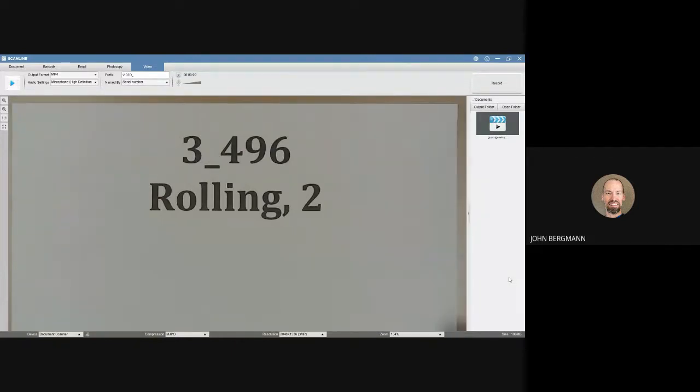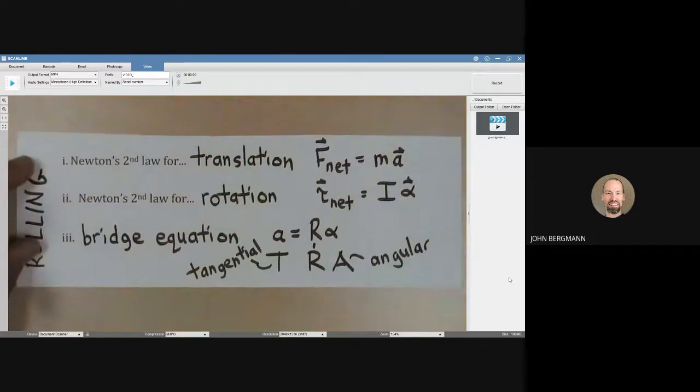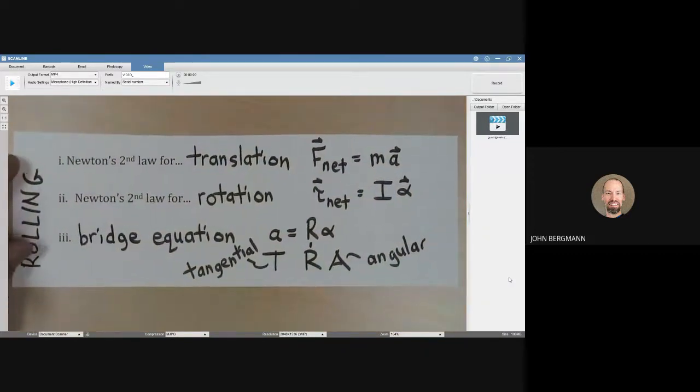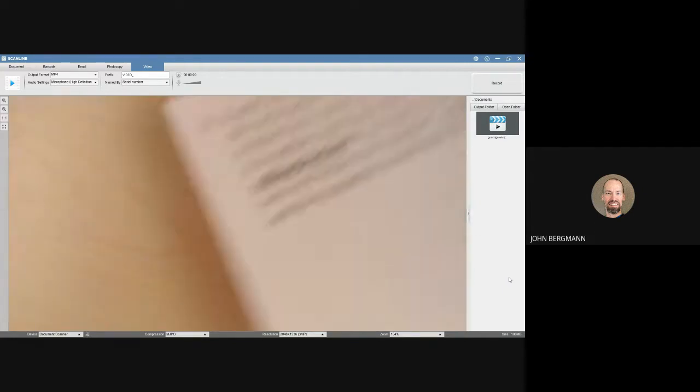Rolling, video 2. In video 1, we mentioned but didn't do any examples that when you deal with a rolling problem, you have to use Newton's second law for translation, Newton's second law for rotation, and this bridge equation which connects angular acceleration with tangential acceleration: a equals r times alpha. We are going to see that here.